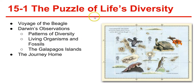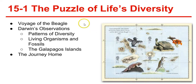First, evolution. Evolution is the process by which modern organisms have descended from ancient organisms. Evolution is a theory — the theory of evolution — and a theory is a well-supported, testable explanation of phenomena that have occurred in the natural world.